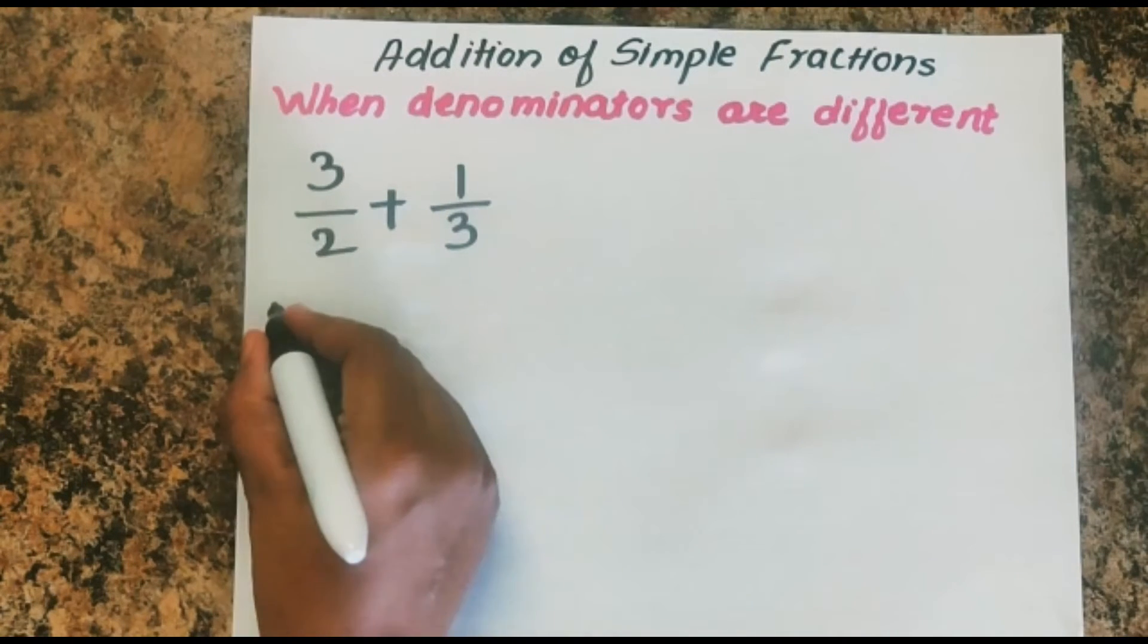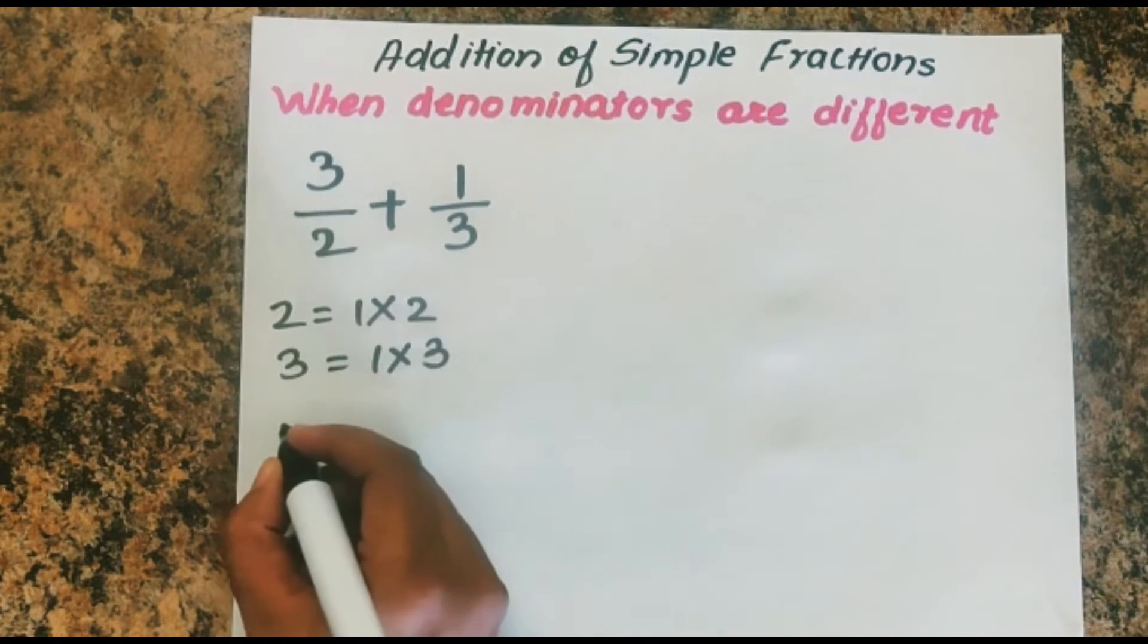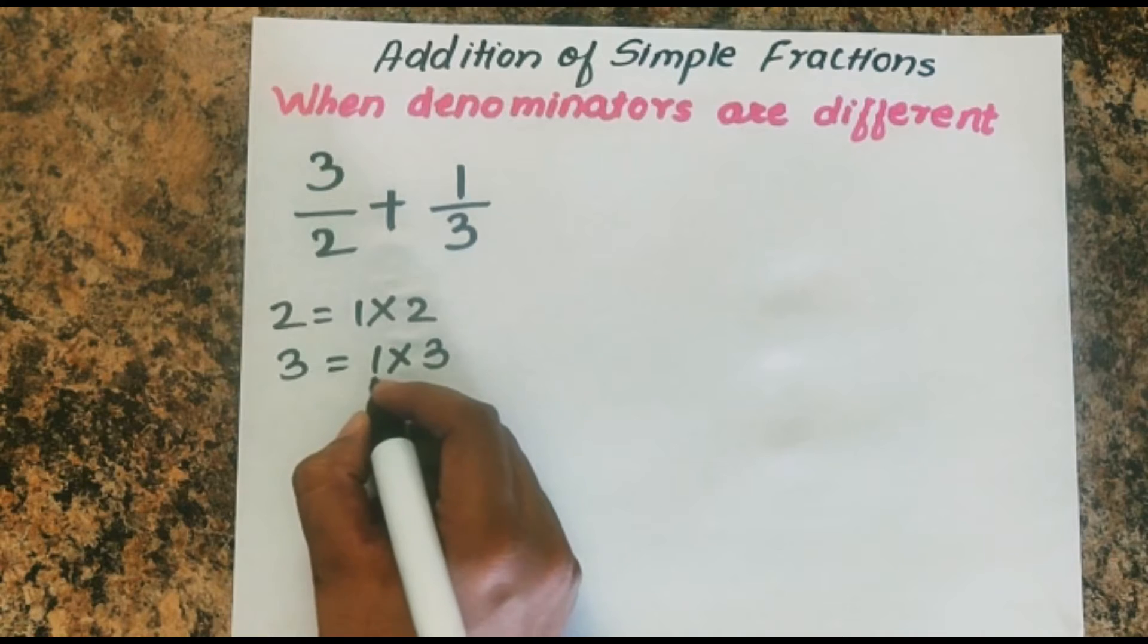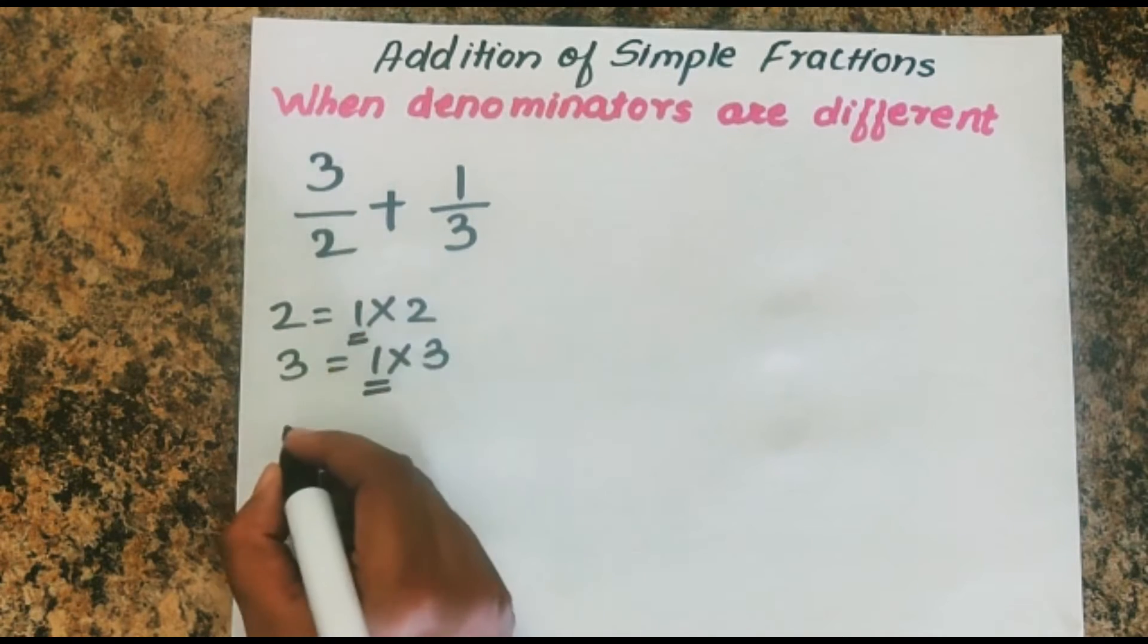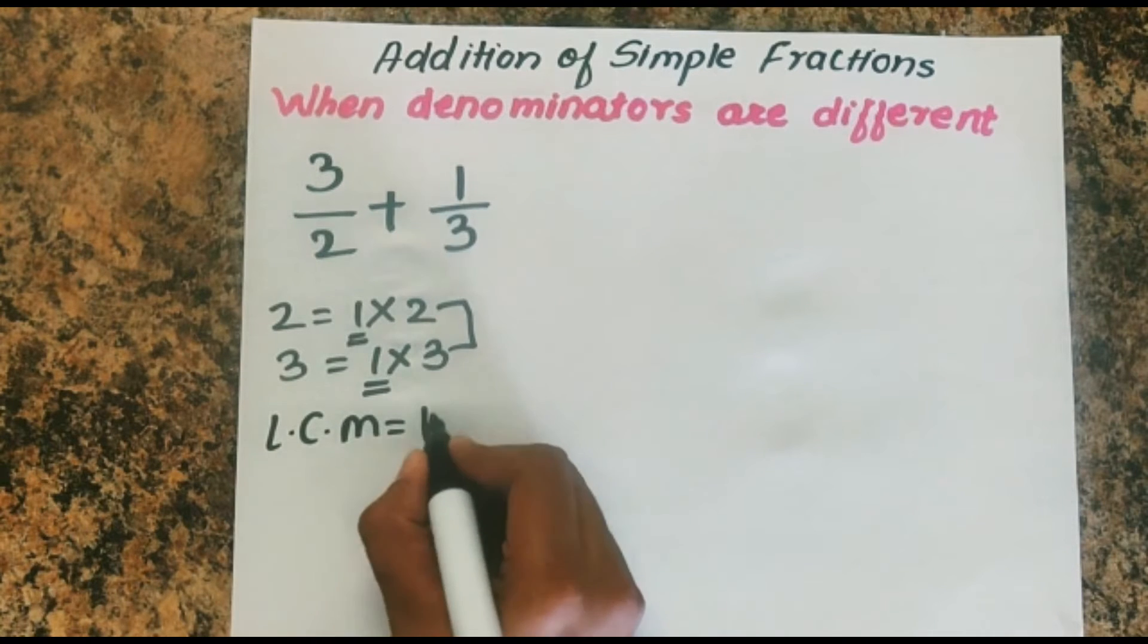In this case you can find LCM, but as they both are prime numbers, 2 equals 1 into 2, 3 equals 1 into 3. The LCM is common into uncommon. The common factor is just 1 and uncommon is 2 and 3, so LCM is 1 into 2 into 3.